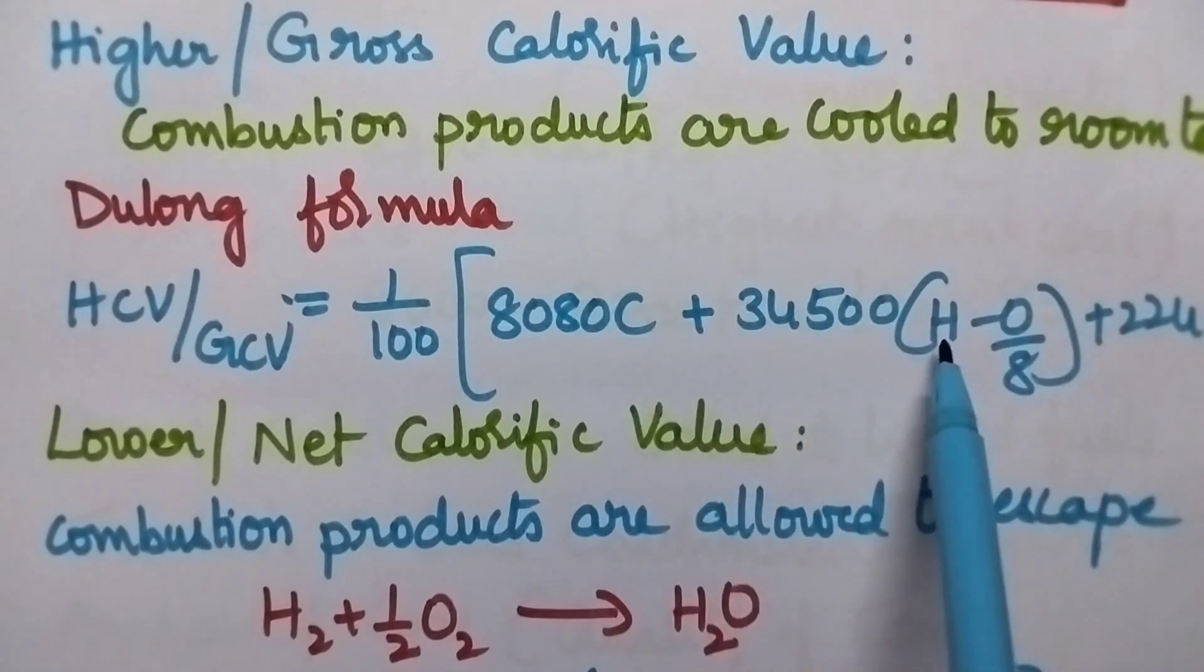Here C, H, O and S represents the percentage of carbon, percentage of hydrogen, percentage of oxygen and the percentage of sulfur present in the given fuel sample.